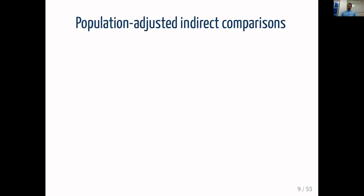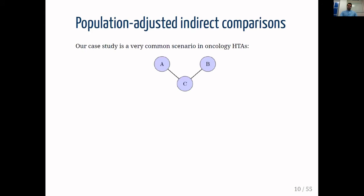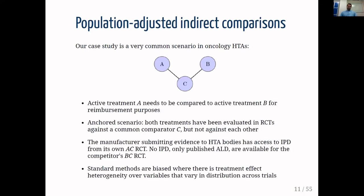The case study we are dealing with is population-adjusted indirect comparisons in the anchored scenario. A manufacturer has access to IPD patient-level data from its active treatment A, and needs to compare treatment A to another treatment B that is likely already on the market. There is a common comparator C, and another trial comparing treatment B and treatment C, but the manufacturer does not have access to patient-level data for this trial — only aggregate-level data. Under standard methods such as the Bucher method or standard network meta-analysis, these comparisons are biased.